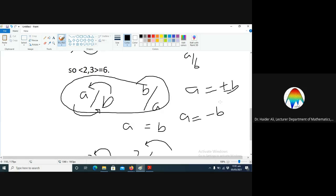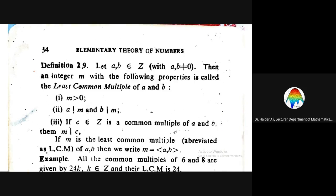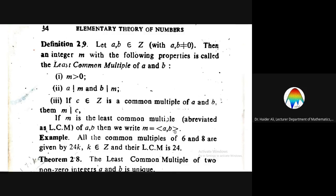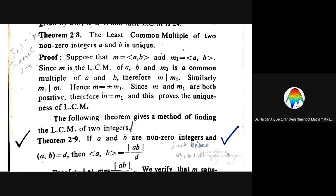Similarly, m1 equals m. Since m equals plus or minus m1, and by definition both m and m1 are positive — as they are least common multiples — both values are positive.